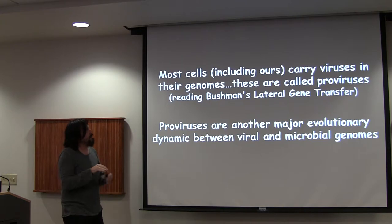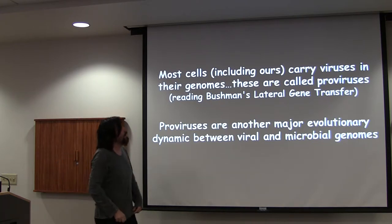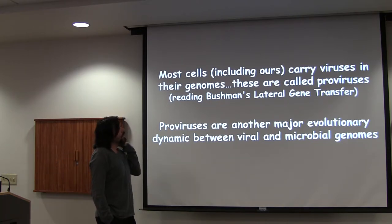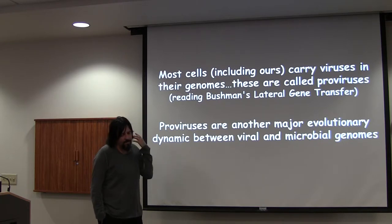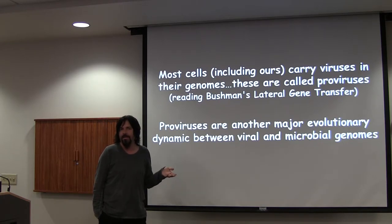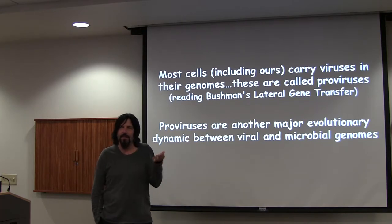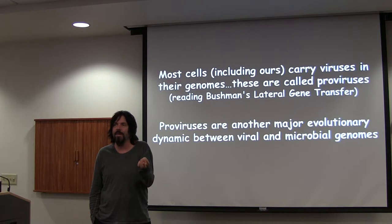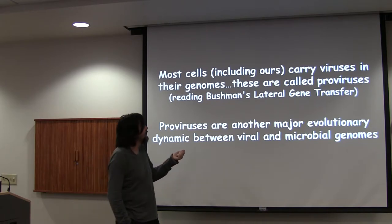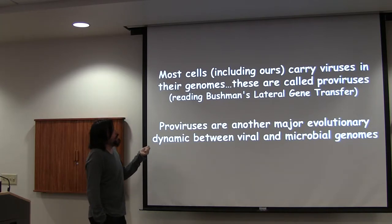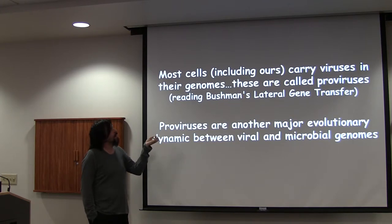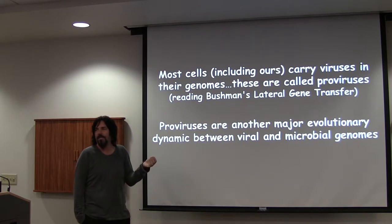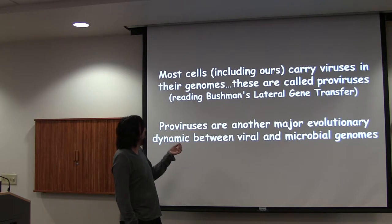The other part of this, for the evolutionary discussion, is that all we've been talking about is lytic behavior. That's a little biased because when we look in the marine environment, we mostly see evidence of lytic behavior — that's the dynamics we're looking at. But essentially all cells are actually lysogens — that includes us as well as bacterial cells. They're all carrying some version of proviruses.